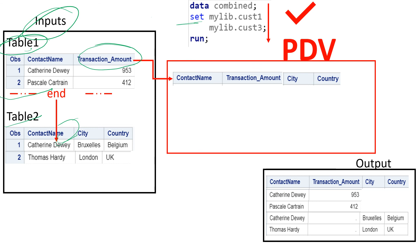The main difference to note between multiple tables with multiple SET statements and multiple tables with one SET statement is: with multiple SET statements, one observation from each table is processed in PDV for each iteration. But with multiple tables in one SET statement, all observations from the first table are processed first, then SAS moves to the next table, and all observations from the next table are processed in PDV and populated in the output, as we just saw in this example.